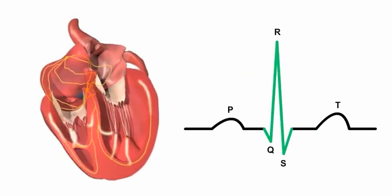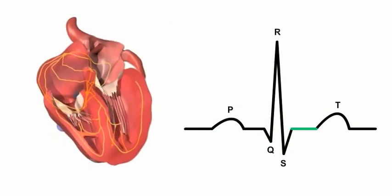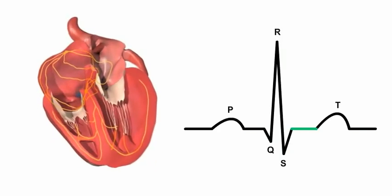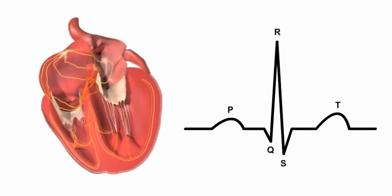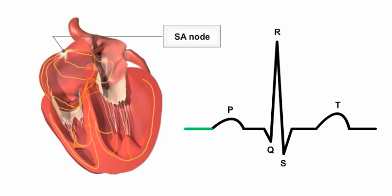Let's look at what happens during a single beat of the heart and how these events are depicted on an ECG. In a normal heart, each beat begins in the right atrium with an action potential signal from the sinoatrial, or SA, node, the heart's natural pacemaker.